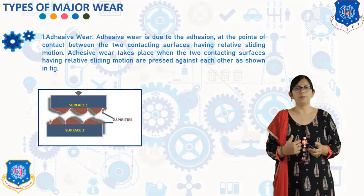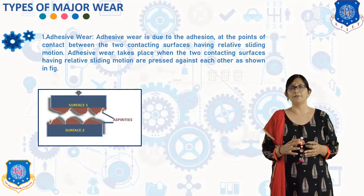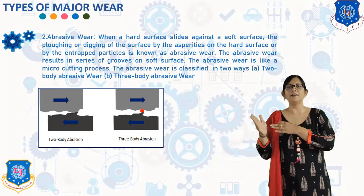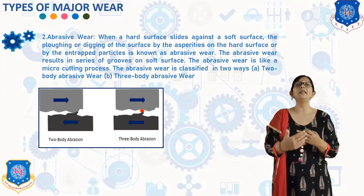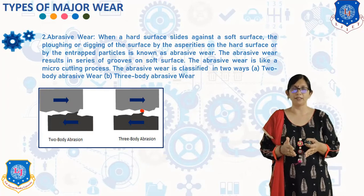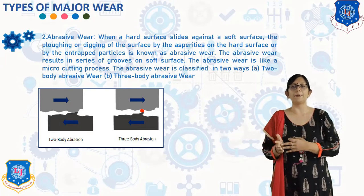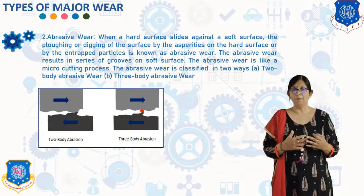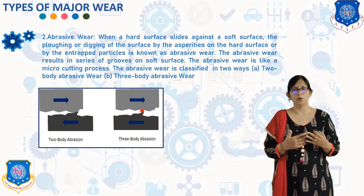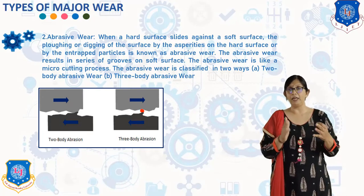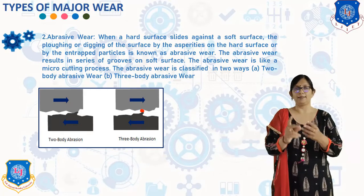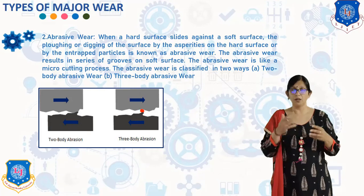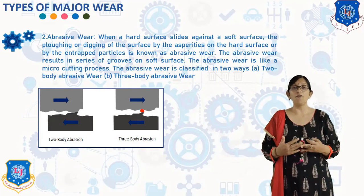The next type is abrasive wear. When a hard surface slides against a soft surface, the plugging or digging of the surface by the asperities on the hard surface, or by hard particles, is known as abrasive wear. It results in a series of grooves on the soft surface and is essentially a micro-cutting process. It is classified into two types: two-body abrasive wear, where a rough hard surface slides against a relatively soft mating surface, and three-body abrasive wear, where hard particles trapped between two sliding surfaces cause abrasive wear on one or both surfaces.